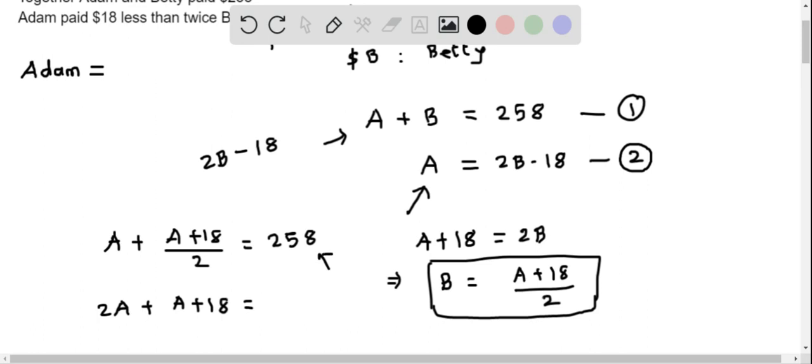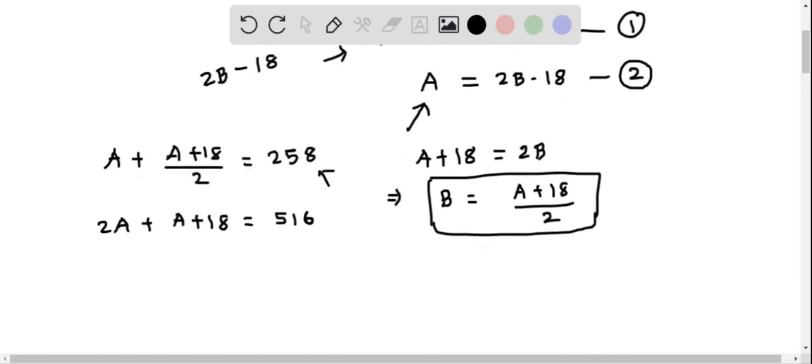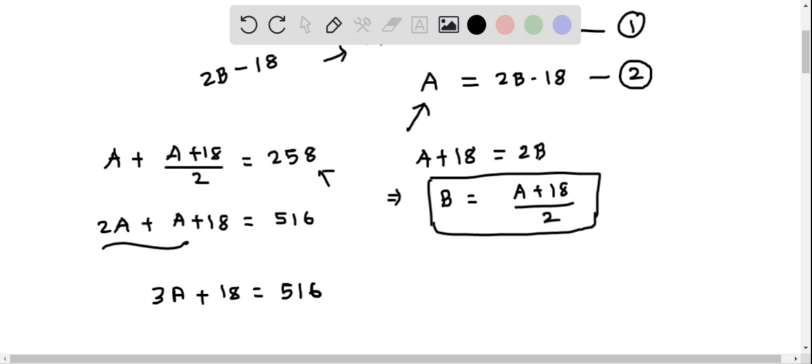We can now combine like terms, so this becomes 3A + 18 = 516. Subtract 18 from both sides, so 3A = 516 - 18, which equals 498.